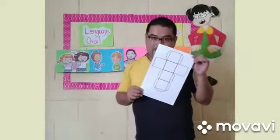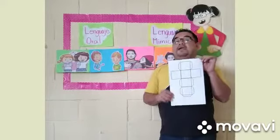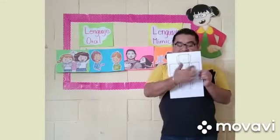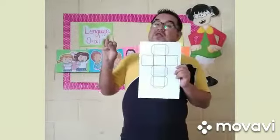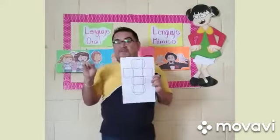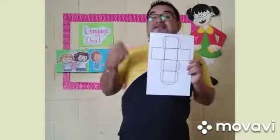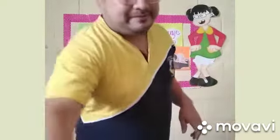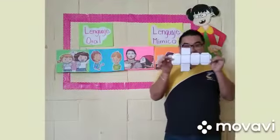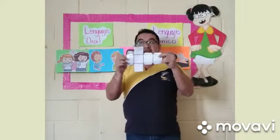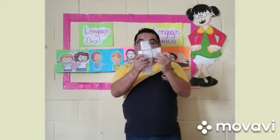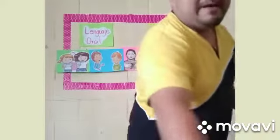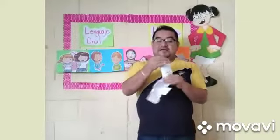En la hoja que ustedes imprimieron o descargaron a su teléfono o dispositivo, les aparece esta hoja. En esta hoja, lo que van a realizar es que en cada una de las partes del cubo van a colocar una gesticulación diferente, como por ejemplo triste, enojado, contento, enamorado, furioso, pensativo. Lo van a dibujar y lo van a colorear. Ya cuando lo tengan dibujado y coloreado, lo van a recortar y les va a quedar de esta manera. Después de haberlo recortado, van a doblar cada una de las partes del cubo para poderlo armar. Vamos a utilizar goma para poder pegar las partes y ver cómo nos está quedando nuestro cubo.